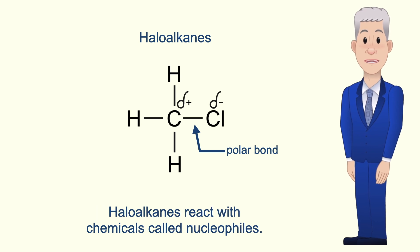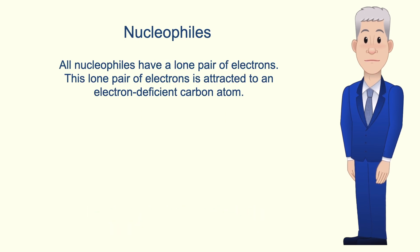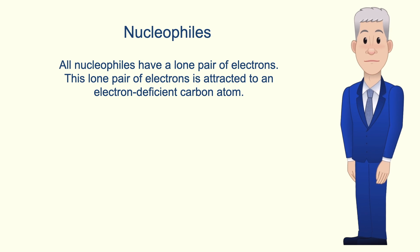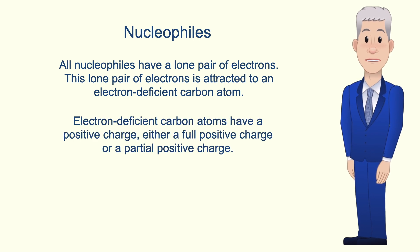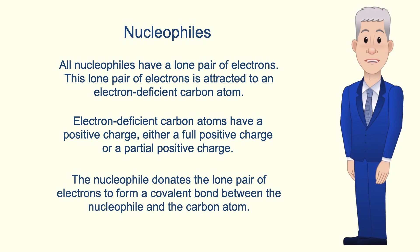Haloalkanes react with chemicals called nucleophiles. So let's start by looking at what's meant by a nucleophile. All nucleophiles have a lone pair of electrons, and this lone pair of electrons is attracted to an electron-deficient carbon atom. Electron-deficient carbon atoms have a positive charge — either a full positive charge or a partial positive charge. The nucleophile donates the lone pair of electrons to form a covalent bond between the nucleophile and the carbon atom.